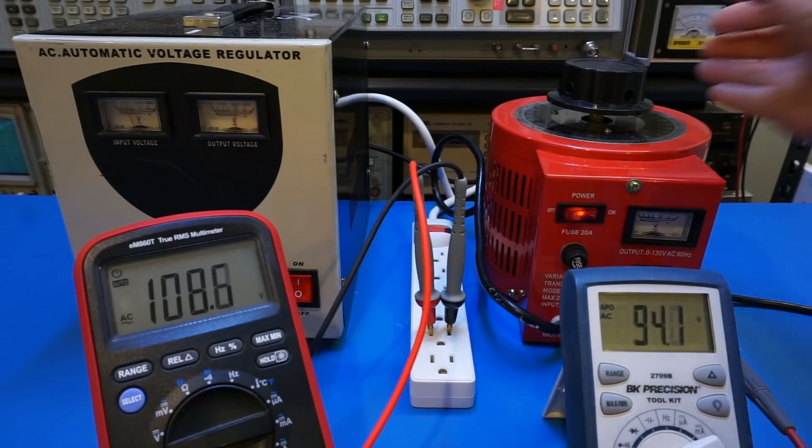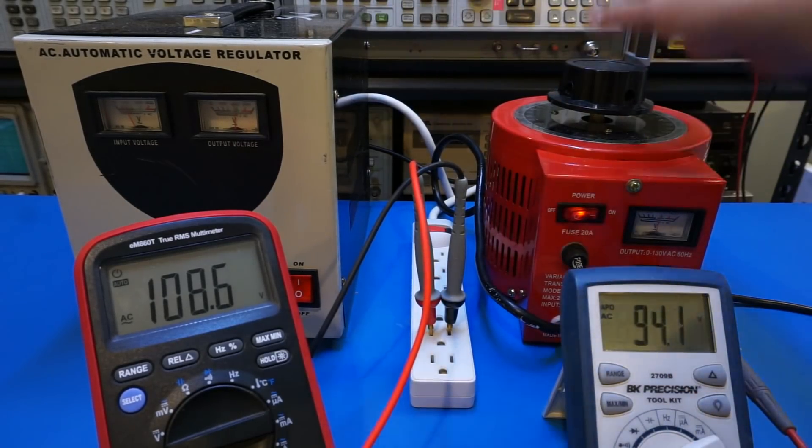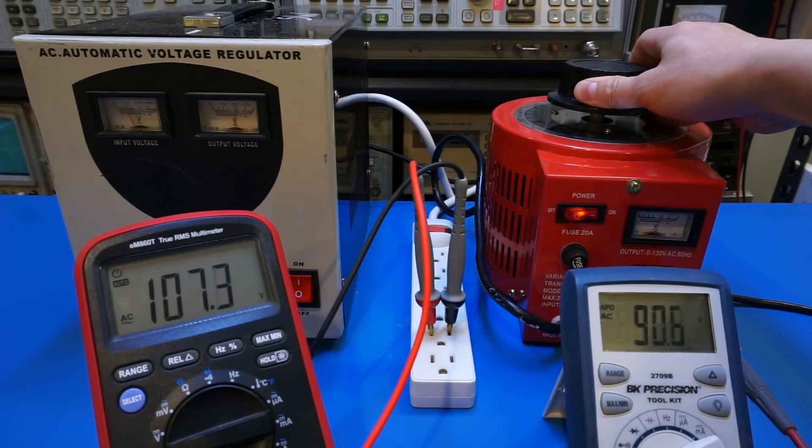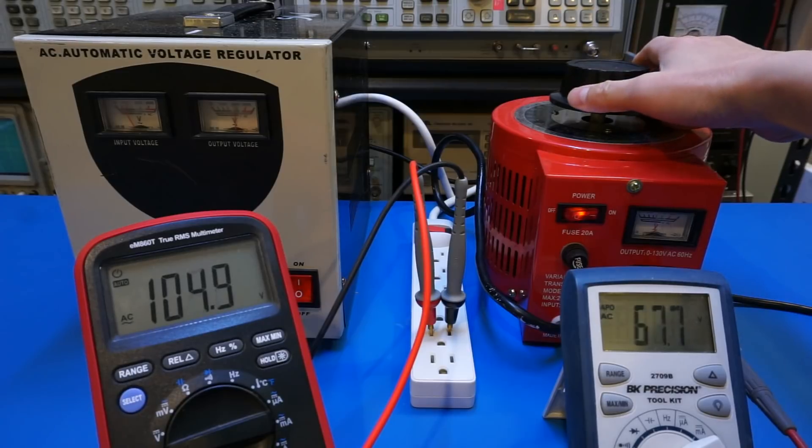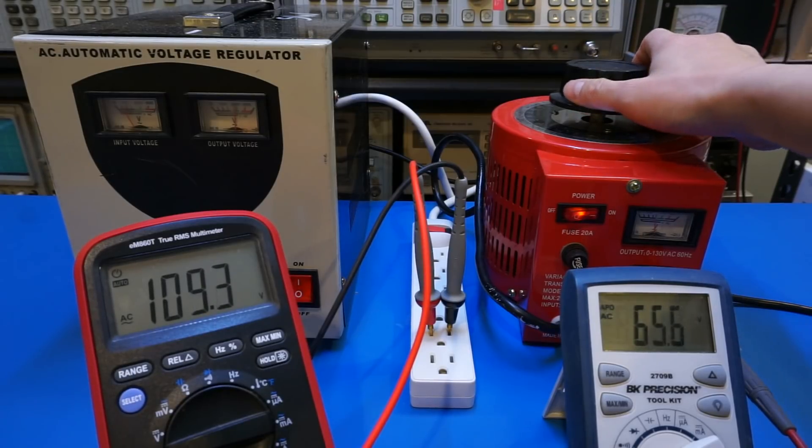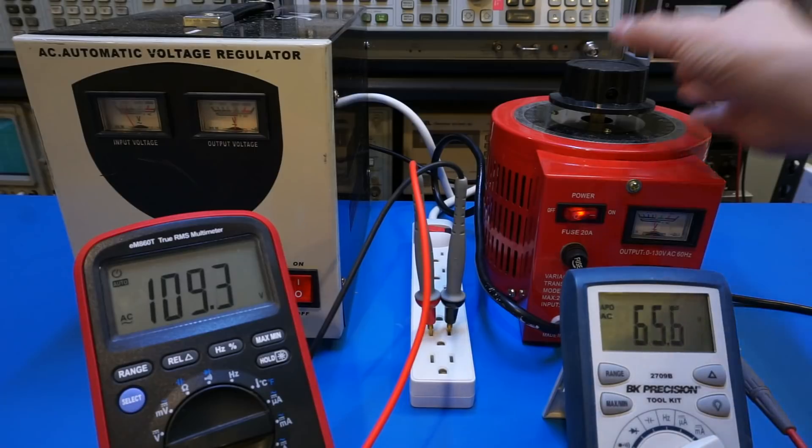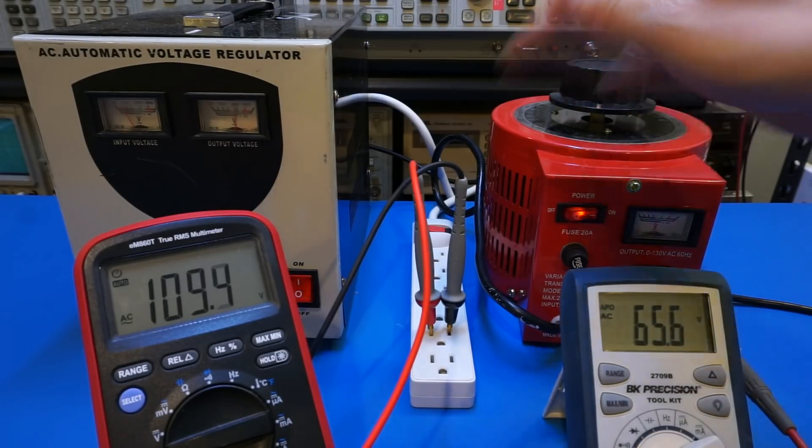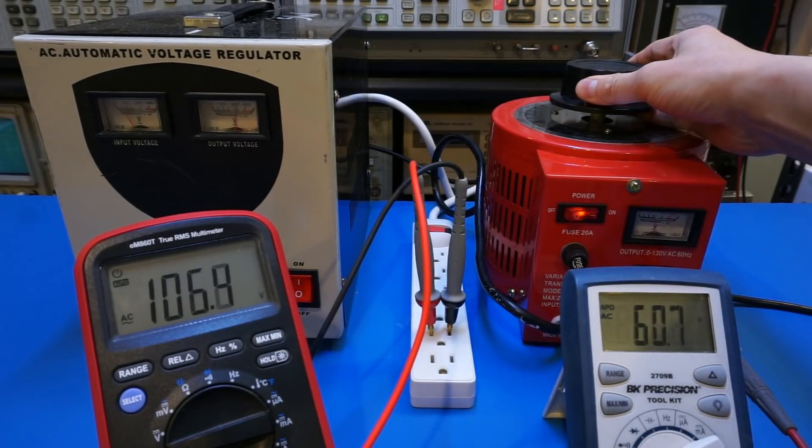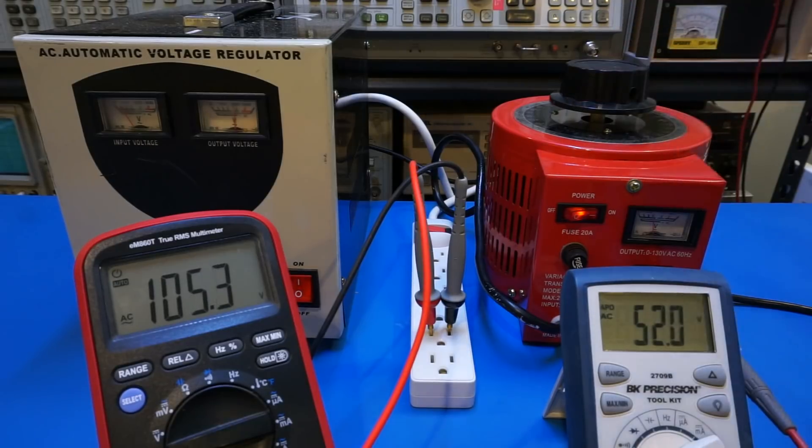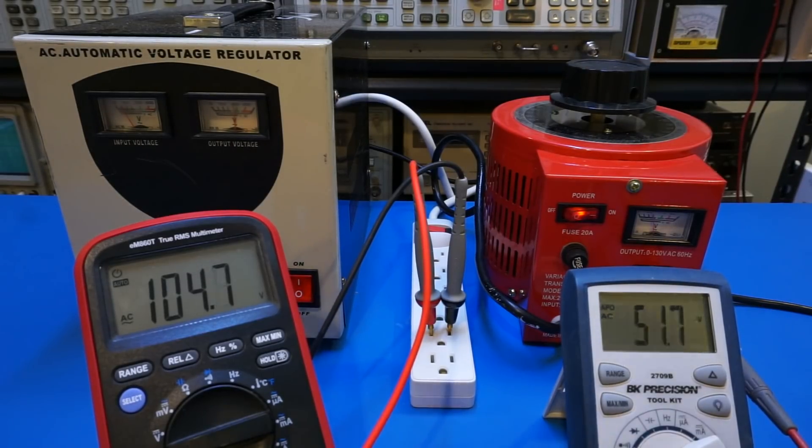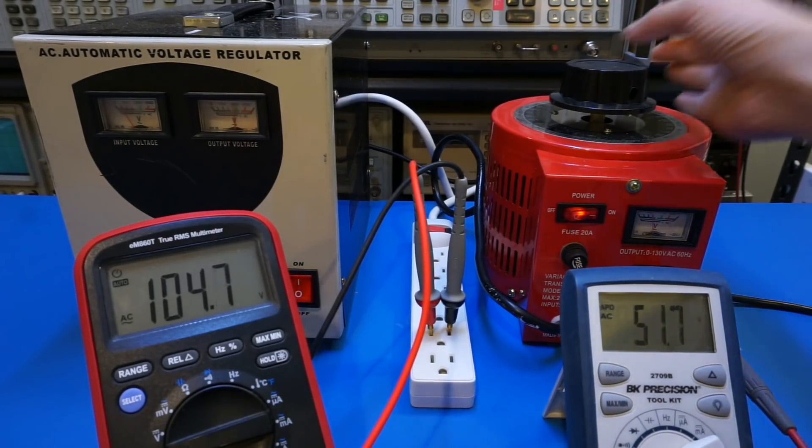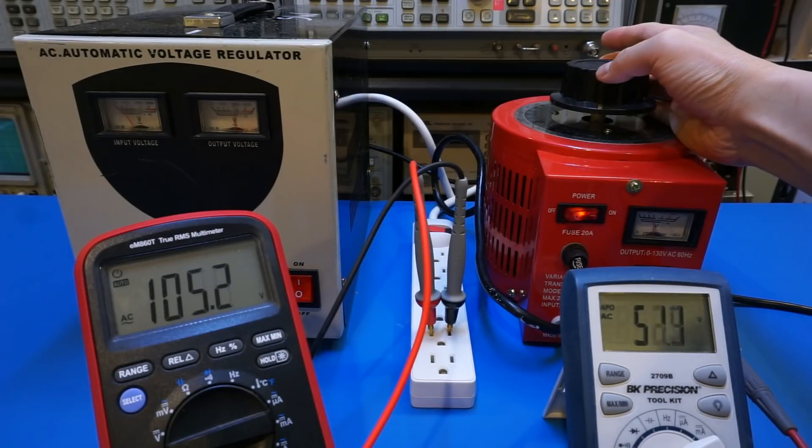So now we are at 94 volts input, and output remains around 110, and we can further reduce it. So 76 and 65. So as you can see, the range is actually pretty broad, and the cutoff voltage here, I think, is around right around 60 volts. Now, you can see that it's no longer able to regulate the output voltage. So that's pretty good. So now let's turn the other direction. So I'm going to turn it up very fast, and you can see that because it's a servo driving the wiper, it actually takes some time to settle.